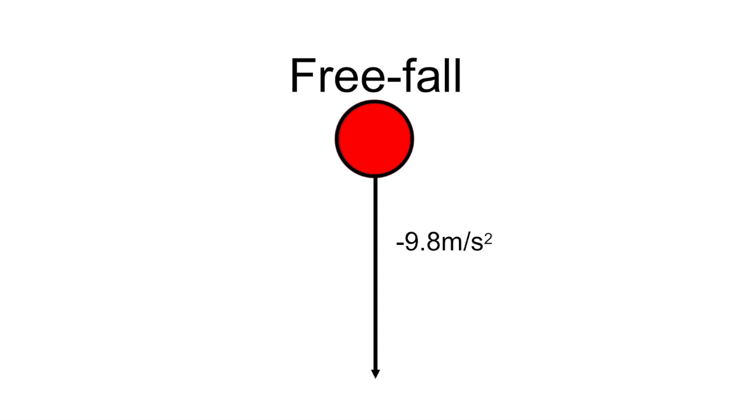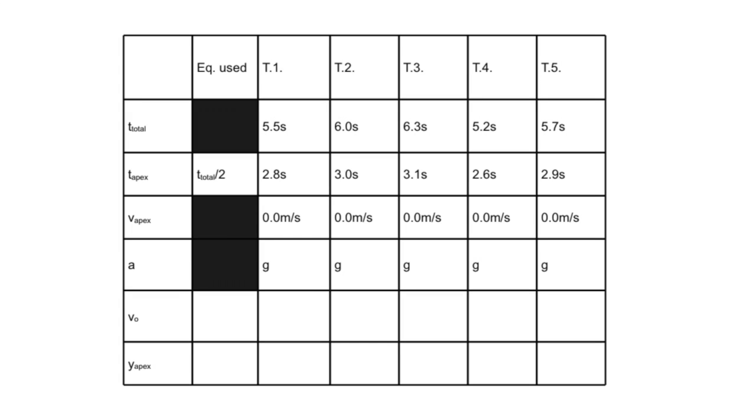In addition, the object is in free fall, therefore the acceleration is negative 9.8 meters per second squared. An example of the data table can be seen here.